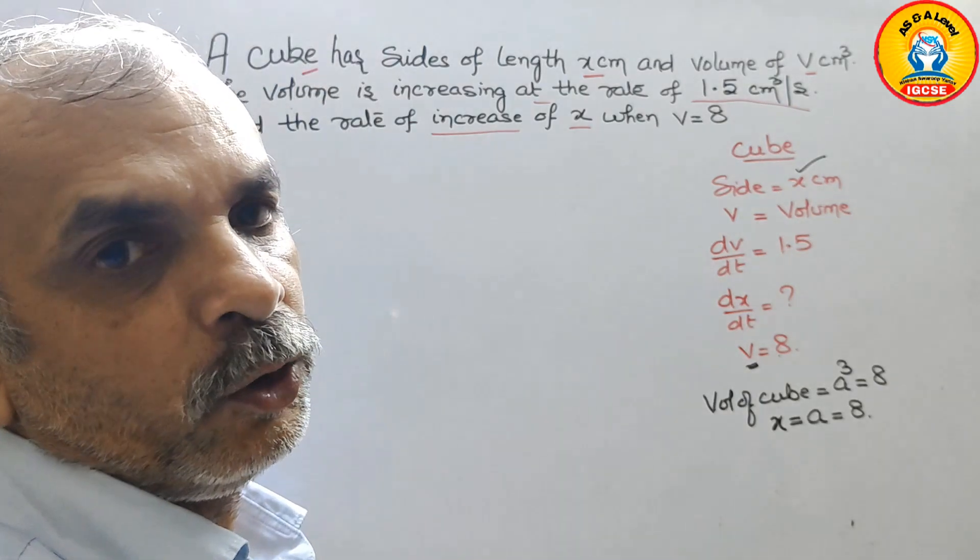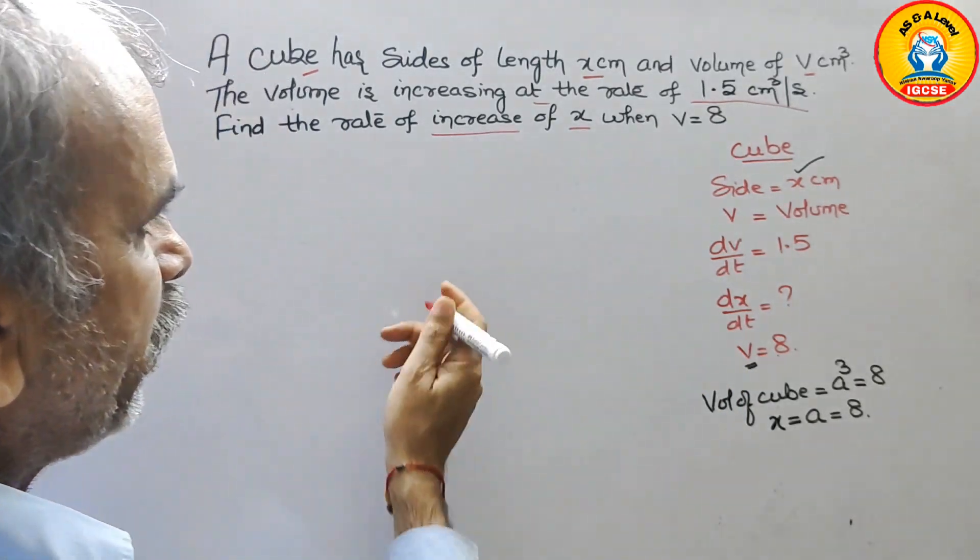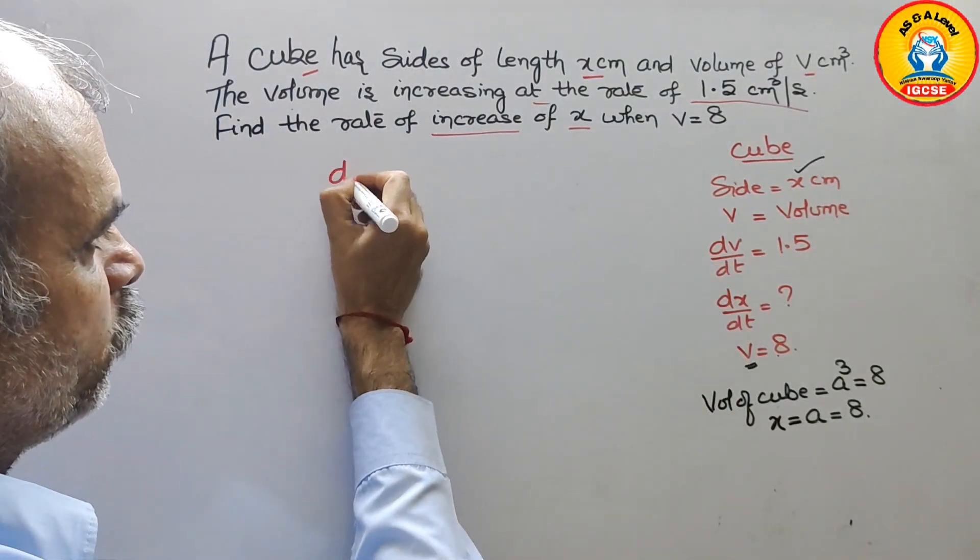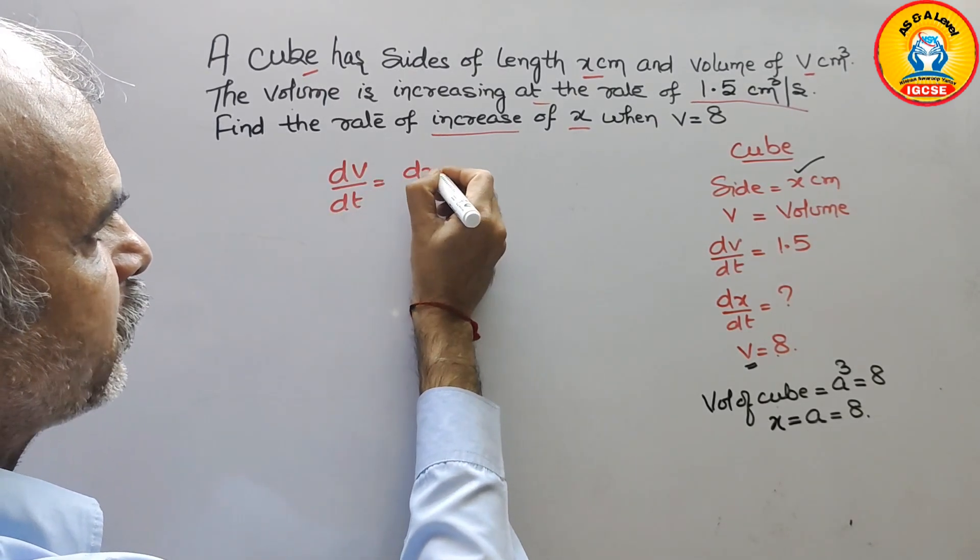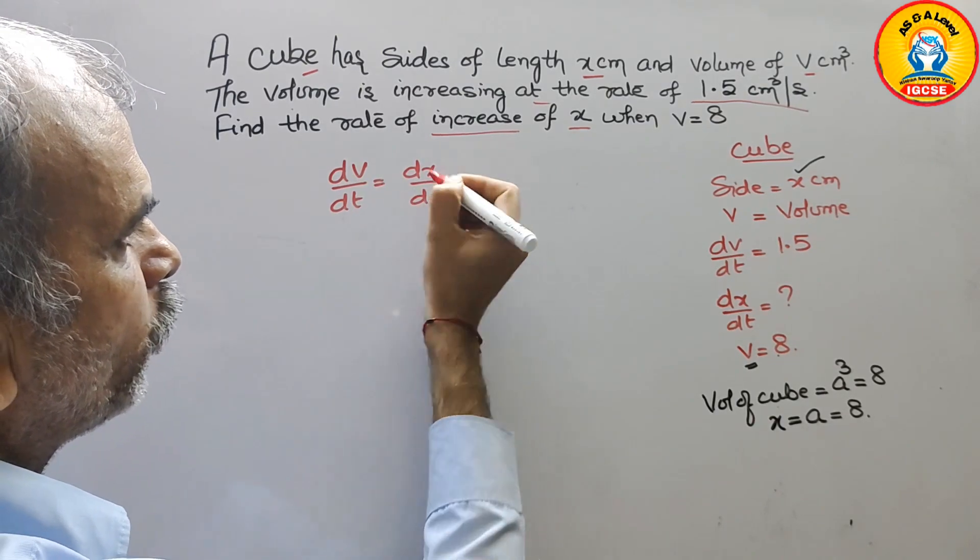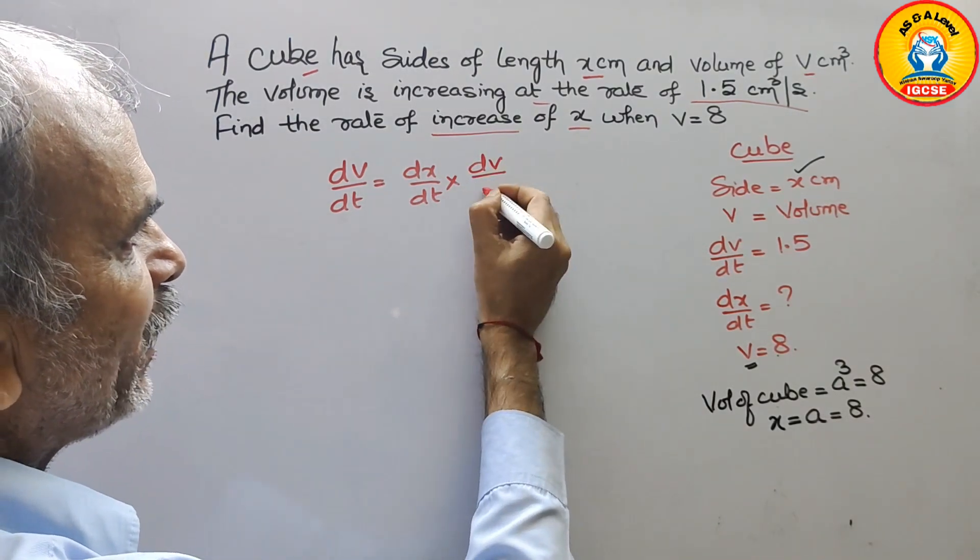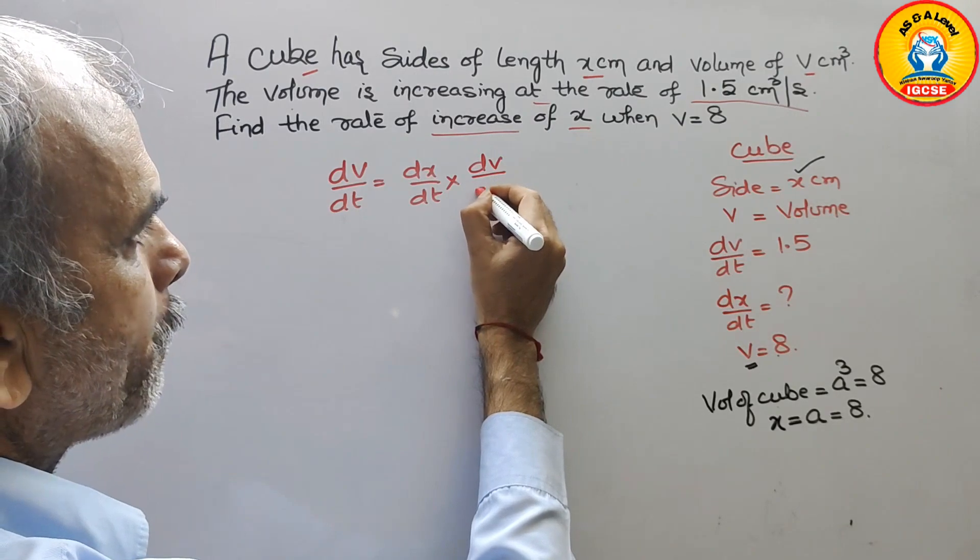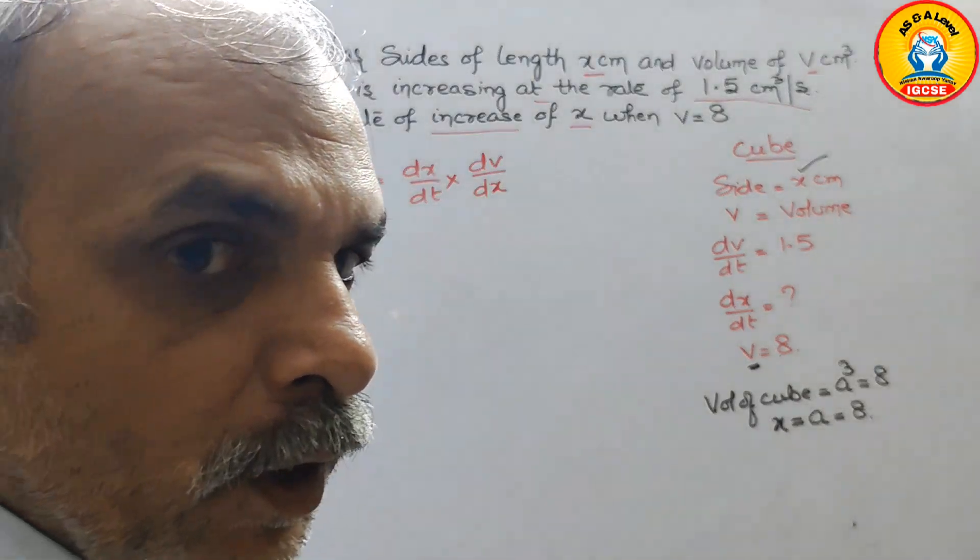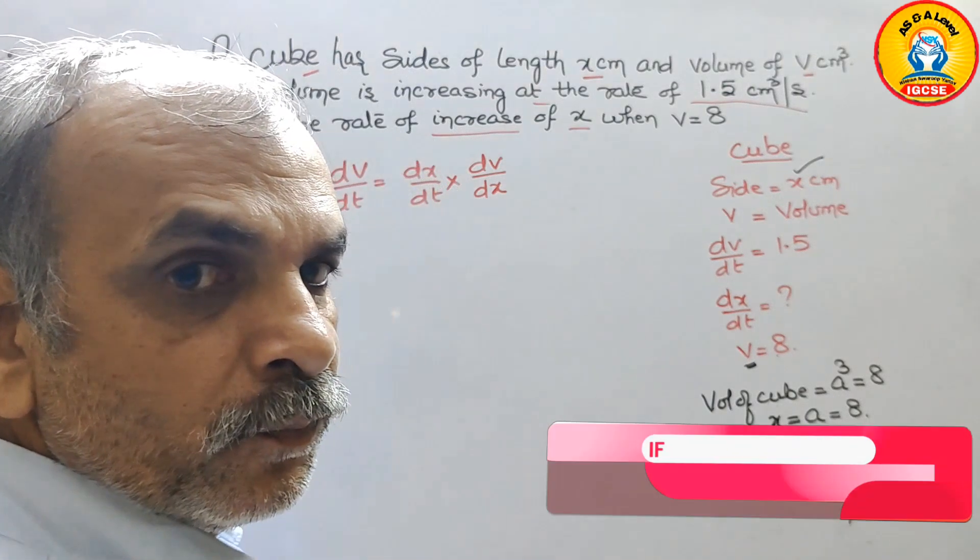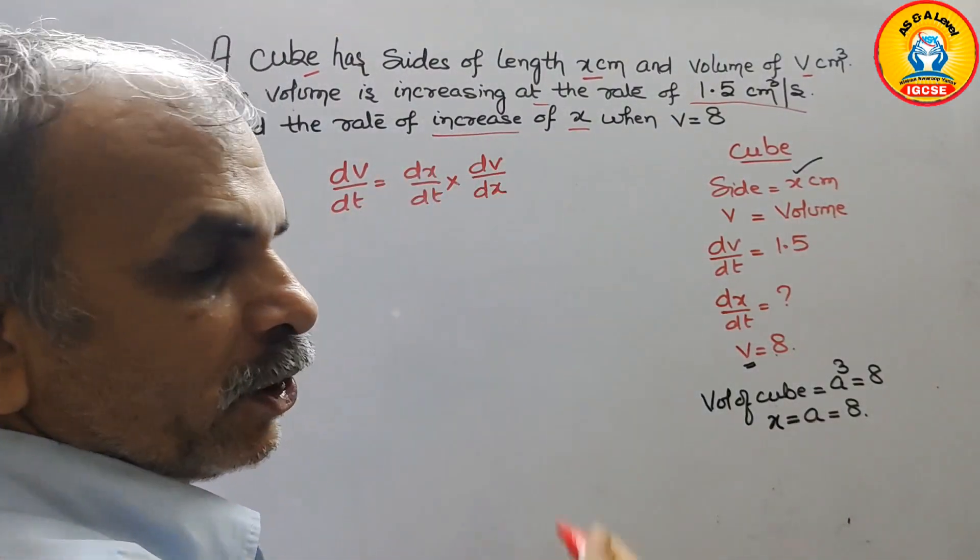Now we will go for a chain rule to find dx by dt. How? So here, dv by dt is equal to dx by dt times dv by dx. So that means we have to substitute this value first.